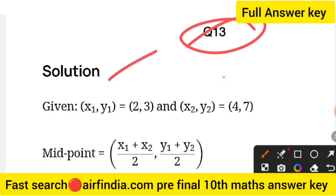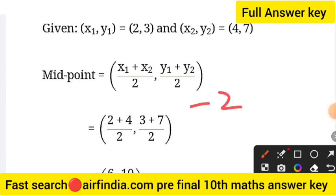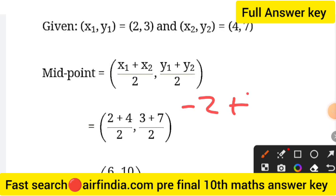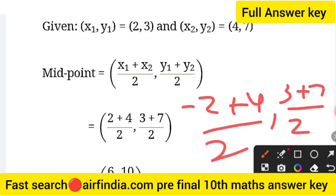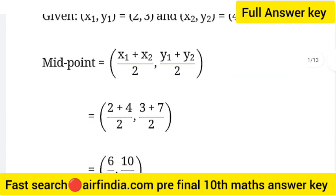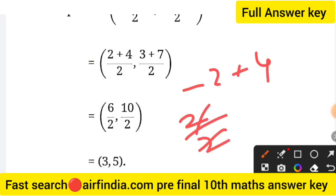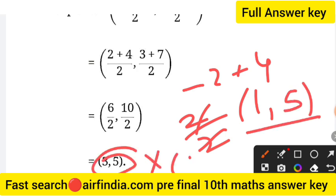This is question 13's answer. Remember that one value is minus 2. The values are: minus 2 plus 4 upon 2, and 3 plus 7 upon 2. So minus 2 plus 4 equals 2, upon 2 equals 1. And 3 plus 7 equals 10, upon 2 equals 5. So your answer is 1 and 5. This is the right answer — not 3 and 5. That was the sample question. The right answer is 1 and 5.